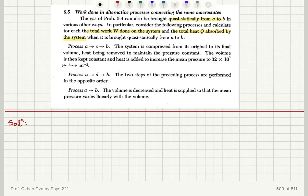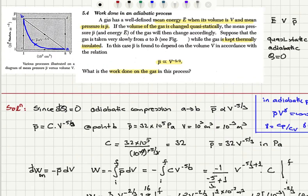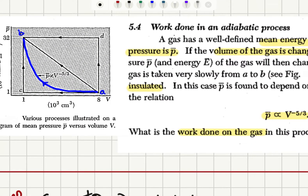In process ACB, the system is compressed from its original to its final volume, heat being removed to maintain the pressure constant. The volume is then kept constant and heat is added to increase the mean pressure to 32 times 10 to the 5 Pascals. So this process A to C to B is shown with red here — A to C and then to B.